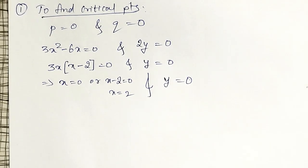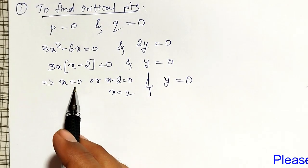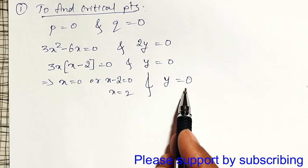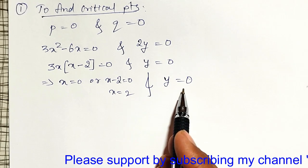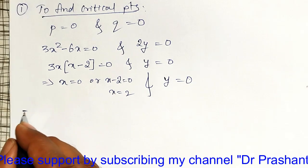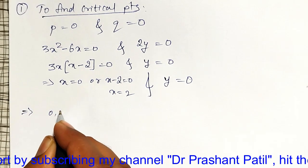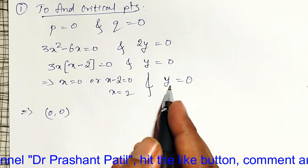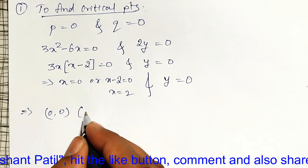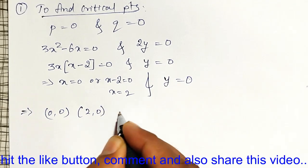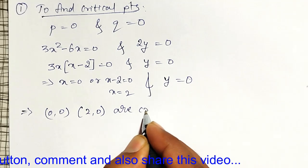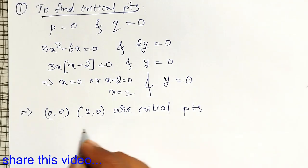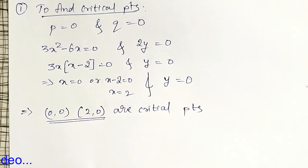Therefore, combinations I have to make. At x equal to 0, y equal to 0. At x equal to 2, y equal to 0. Therefore, there are two critical points. Which implies 0 comma 0. At x equal to 0, y equal to 0. At x equal to 2, y equal to 0. Therefore, 2 comma 0 are the critical points.